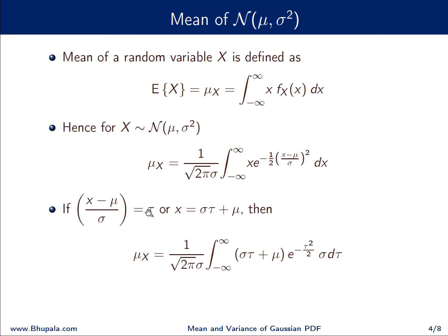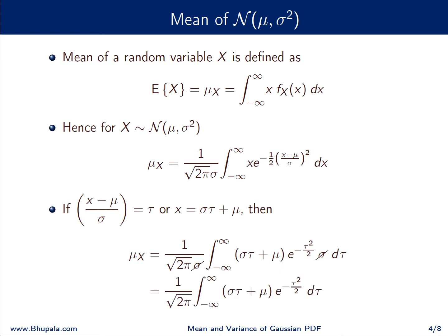With the substitution x = στ + μ, we have dx = σ dτ and (x − μ)/σ = τ. The integral becomes: μ_X = (1 / (√(2π) σ)) × ∫_{−∞}^{∞} (στ + μ) · e^(−τ²/2) · σ dτ. Since σ appears in both numerator and denominator, it cancels, leaving: μ_X = (1/√(2π)) × ∫_{−∞}^{∞} (στ + μ) · e^(−τ²/2) dτ.